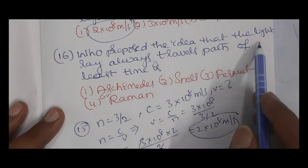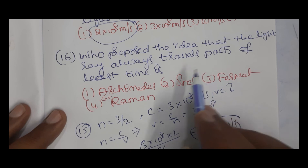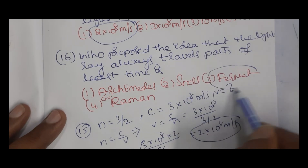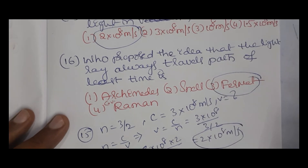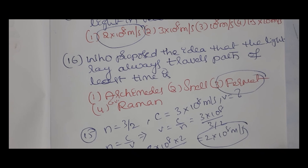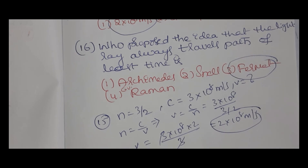Question 16: who proposed the idea that light always travels the path of least time? This is Fermat's principle. So these are the most important bits for this chapter. In the next video, we explain 20 more bits. These bits are enough — practice well to get a better rank.